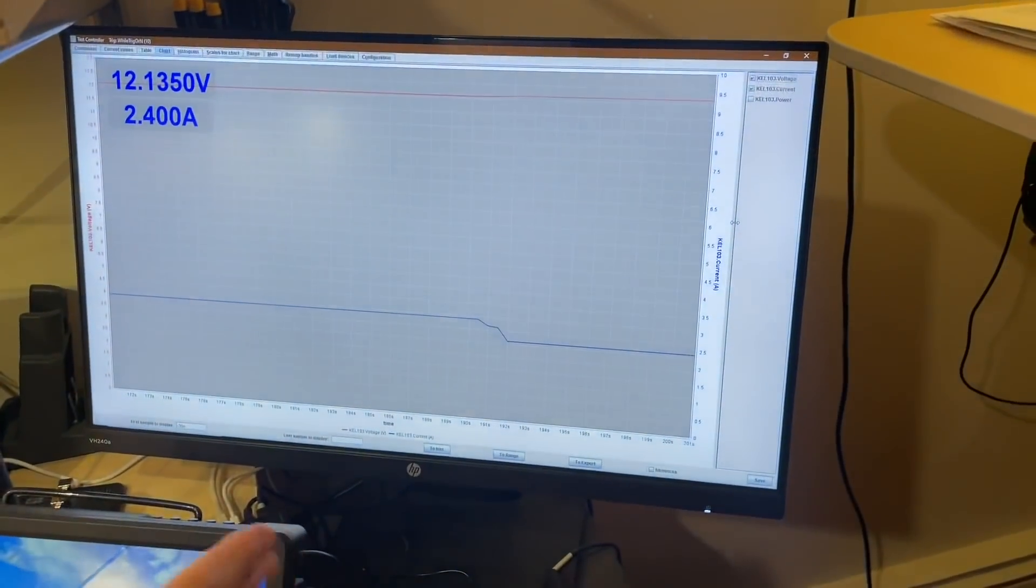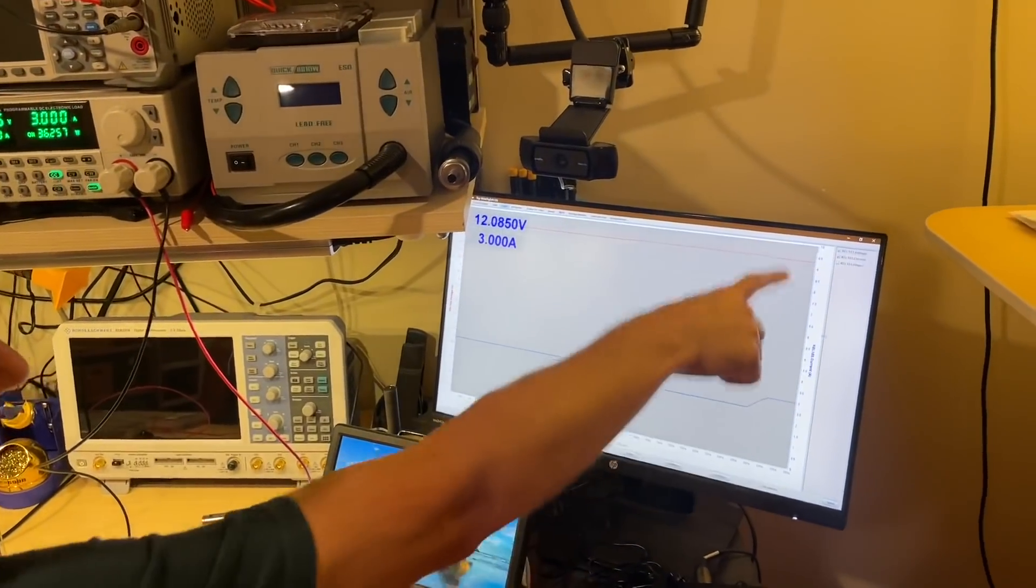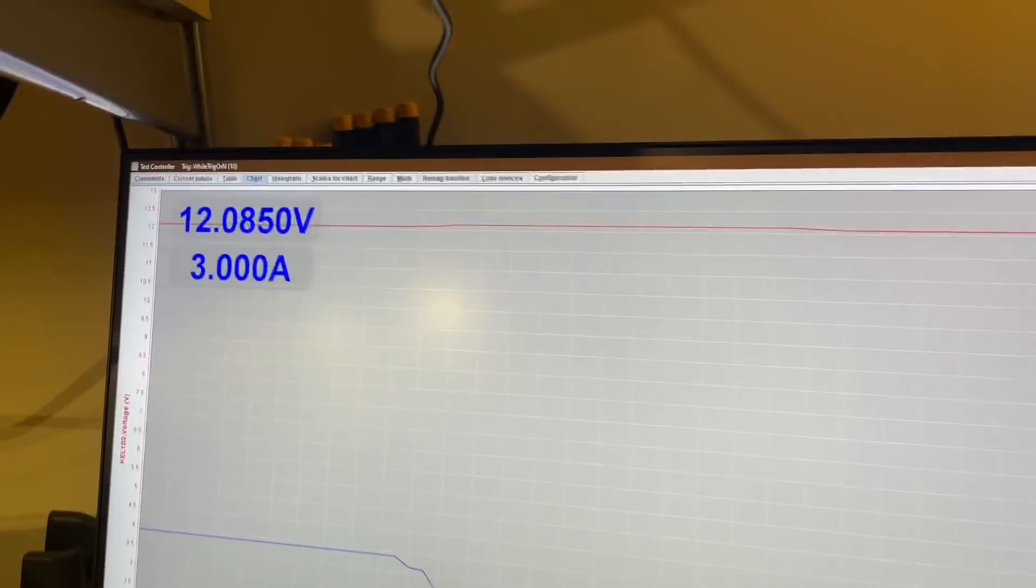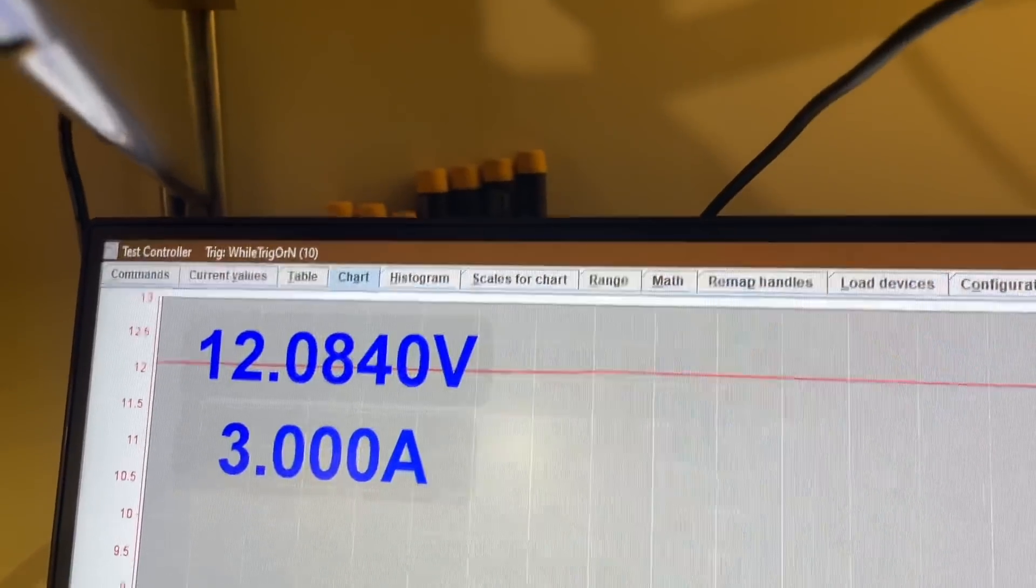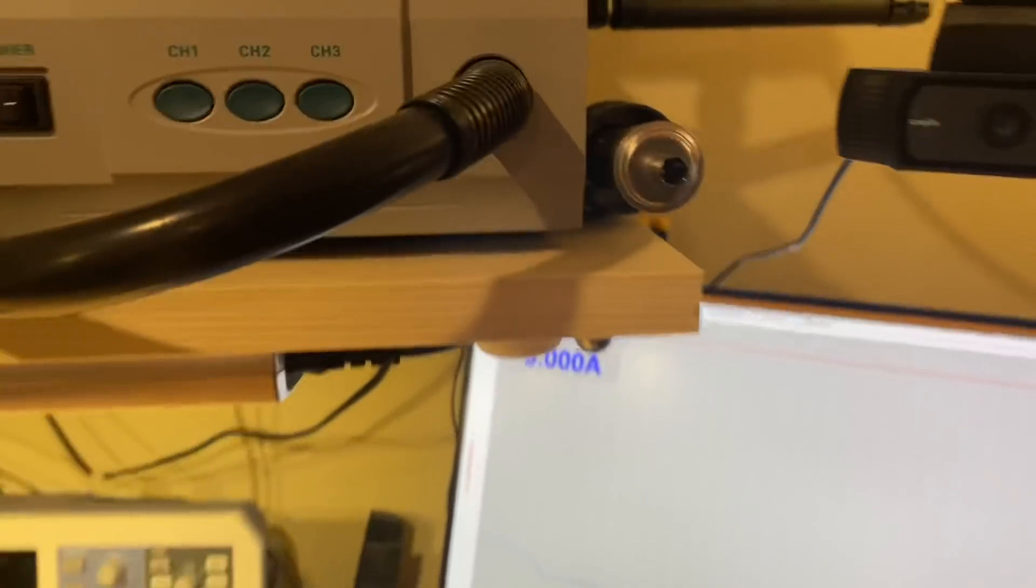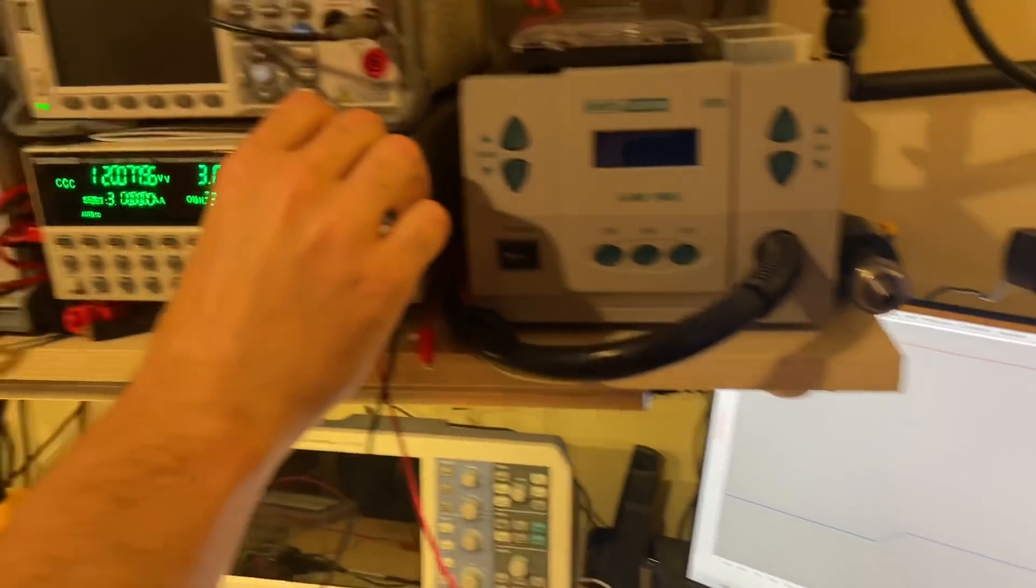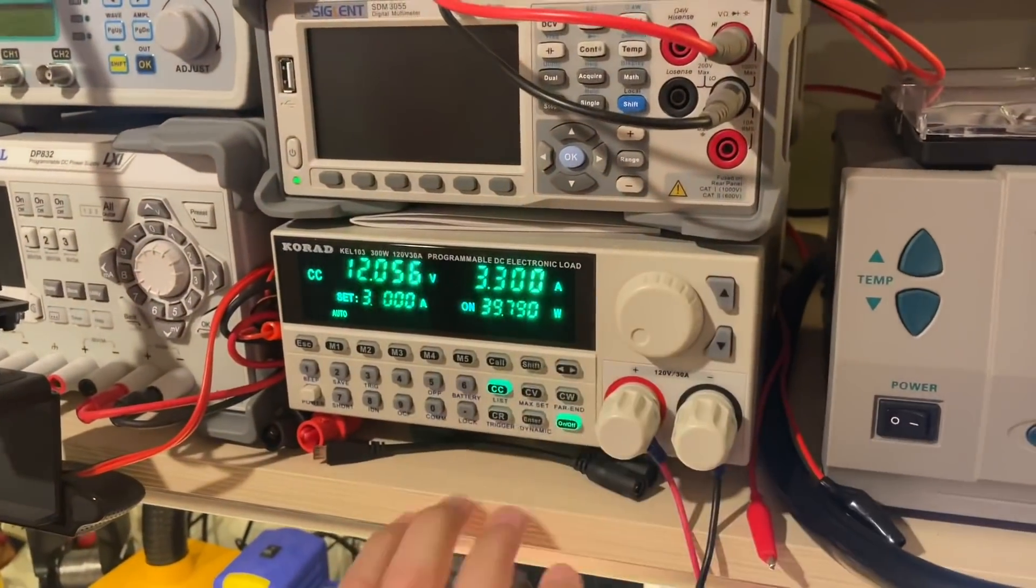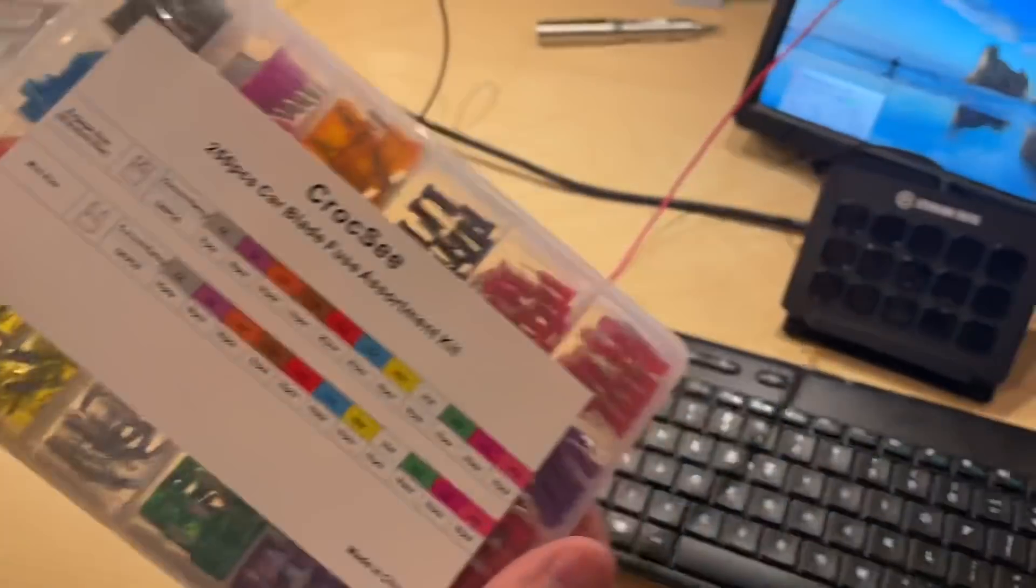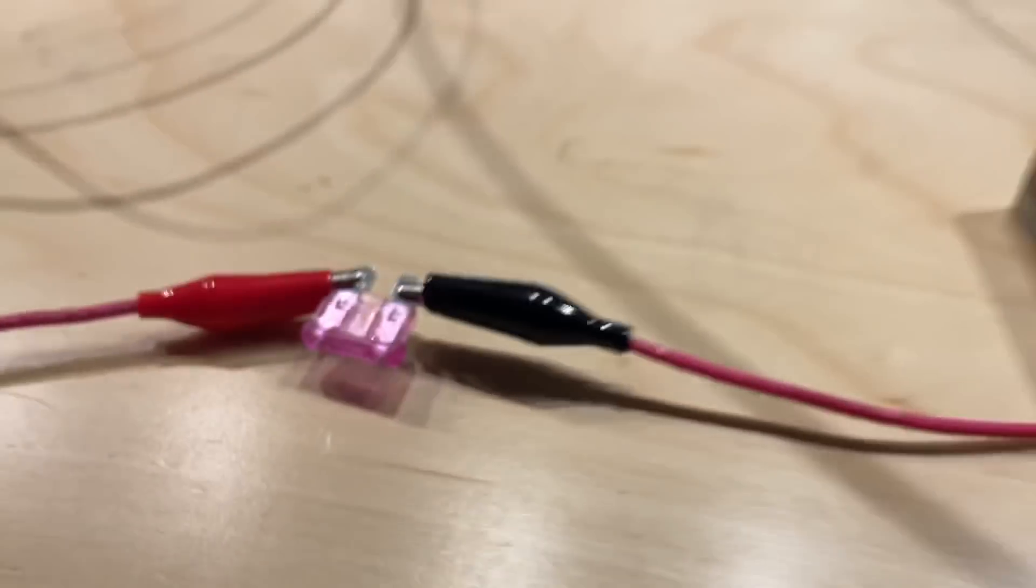This shows the 12 volts coming out of the power supply. Over here on the computer we have a graph. As I turn this up you can see the blue line goes up - there's three amps. The scale goes from zero to ten on the amps and then the red line is the voltage. So right now you're at 3.3 amps and that is a three amp fuse out of an Amazon assortment. And it has not blown yet.